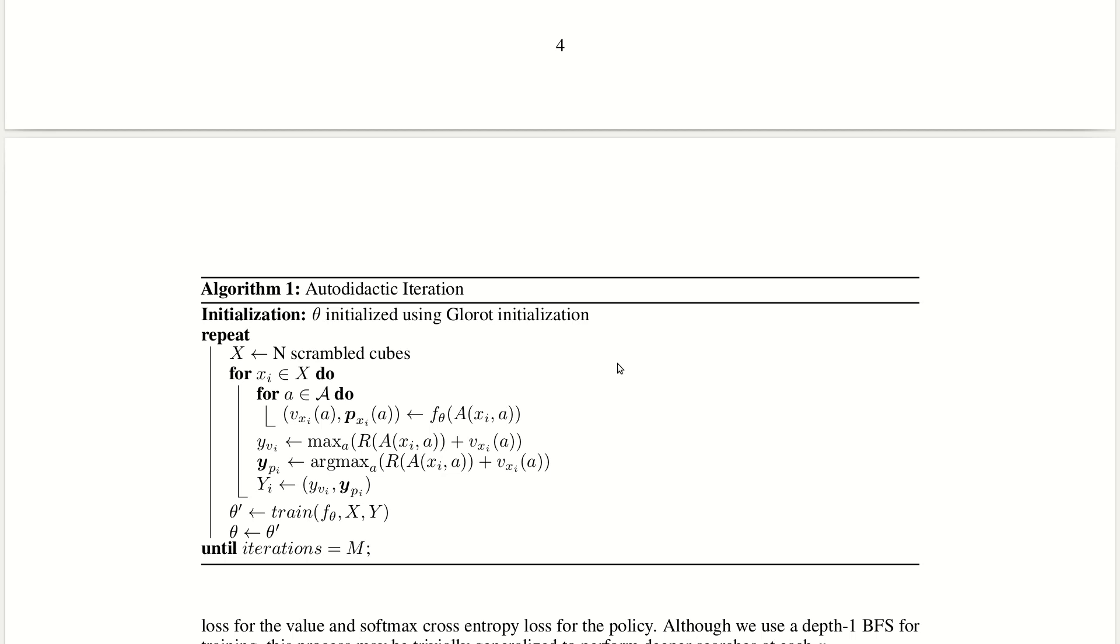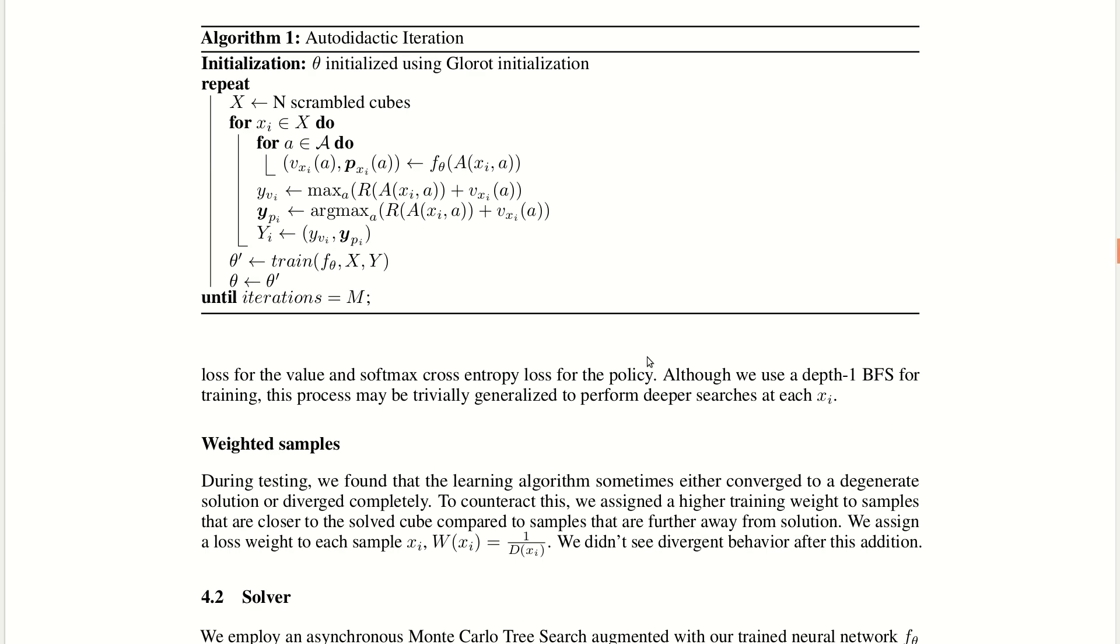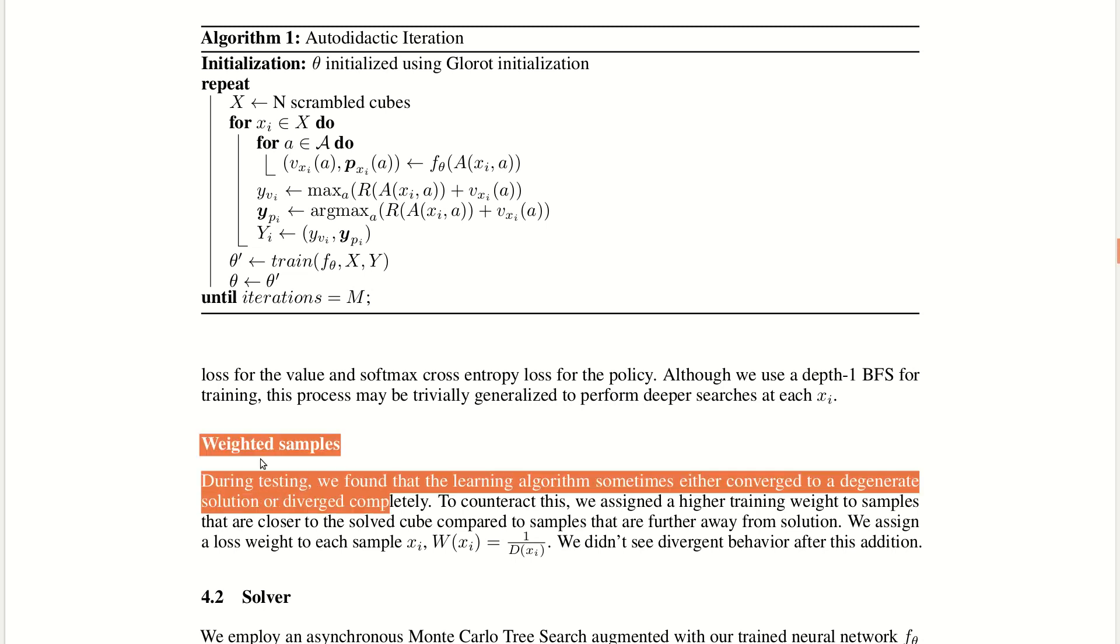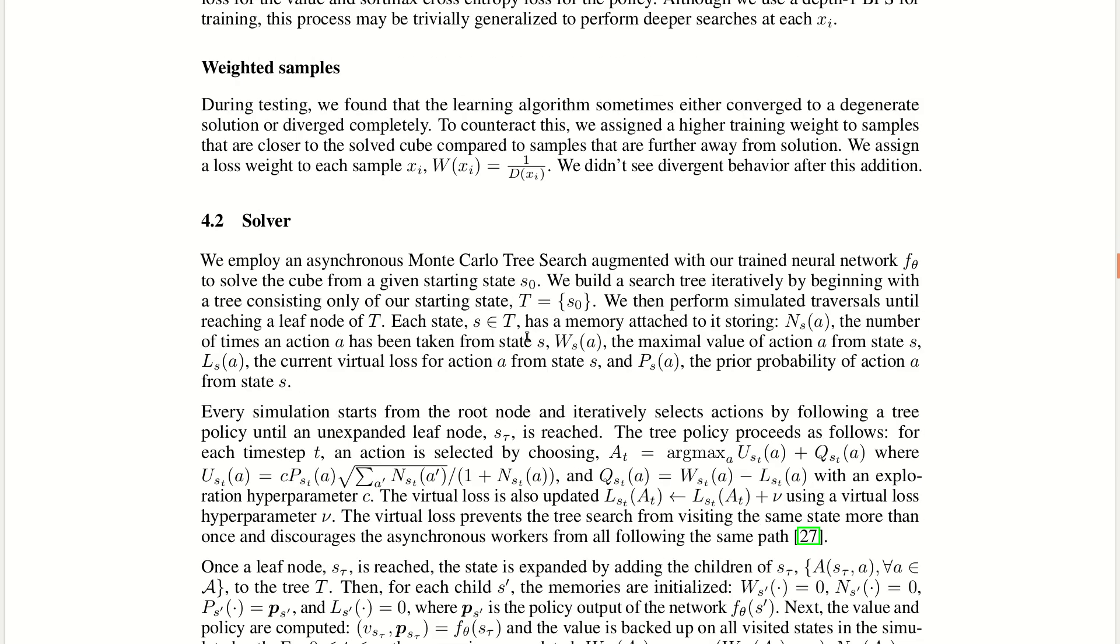The way the cube state is being updated is the cube state is having one additional face turn like F prime or U prime, B prime and we are seeing if there is a positive reward or a negative reward. And if it's a positive reward, that thing is pushed in that direction. This is how they go about updating policy value networks. Since the Rubik's cube is a very sparse reward kind of environment, they have tried to give weight to the sample. That's the additional thing they have done.